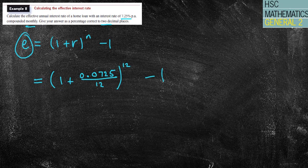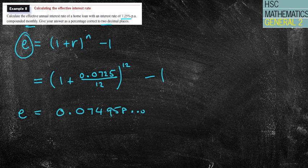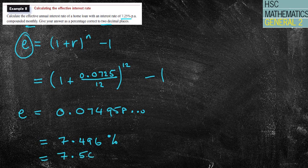Then we subtract 1 from that. We get an effective rate of 0.074958, which as a percentage is 7.496%, or rounded to two decimal places, 7.50%. This is slightly higher than the original 7.25% per annum that we were given.